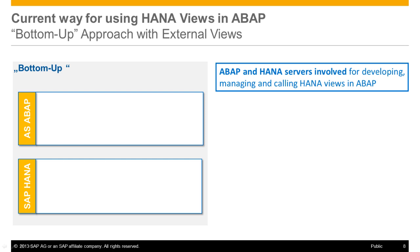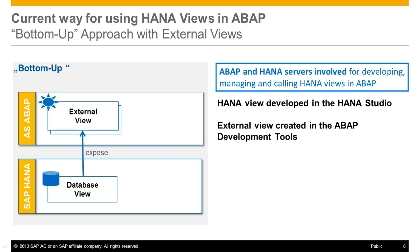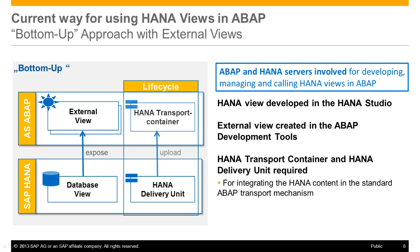The current optimized way for using HANA views in ABAP is the so-called bottom-up approach. First, the HANA views have to be developed in the HANA server and then exposed as an external view in the ABAP server. A HANA delivery unit and the corresponding HANA transport container are required to ensure that dependent ABAP and HANA content is transported together. As we can see, this approach involves the problematic of having different independent life-cycled and transport management systems for dependent HANA and ABAP content.